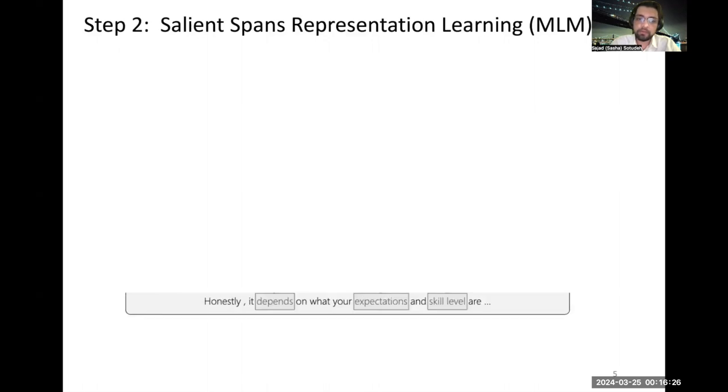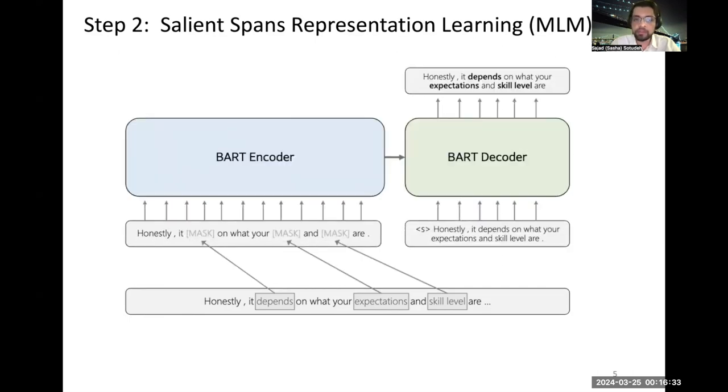In the second step, after identification of these salient spans or salient words, we mask them and feed them into the BART encoder, treating it as a language modeling task. So the mask tokens will be predicted at the end of this process.